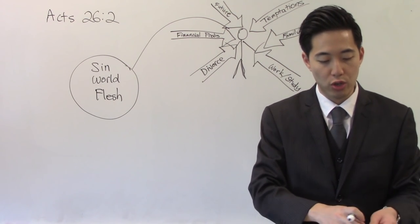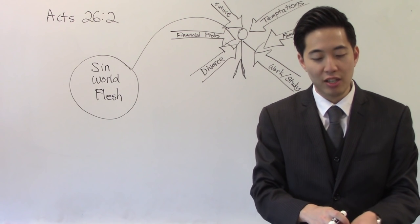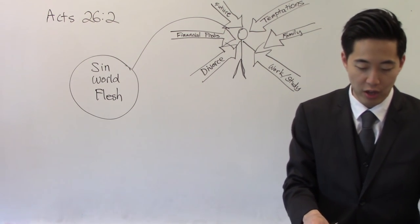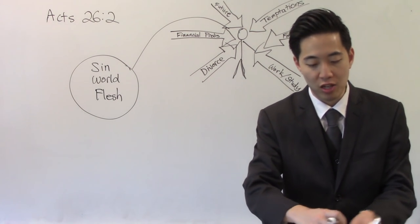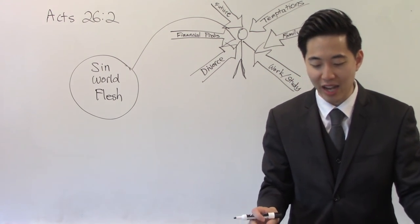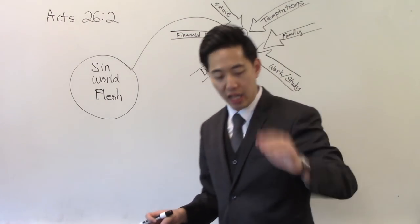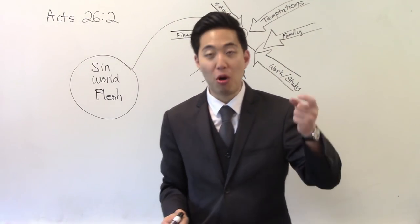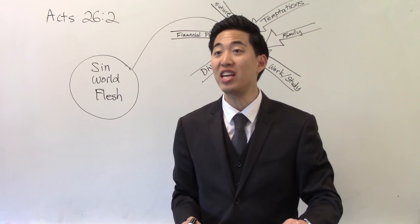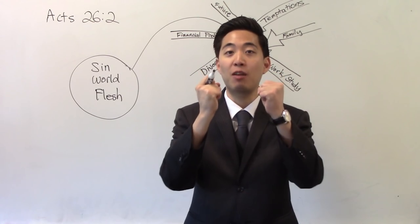Acts chapter 26 verse 2. You won't be depressed unless you think you're depressed, unless you think that you have it hard. But look at Acts chapter 26 verse 2: I think myself happy King Agrippa. And you got to realize this, Paul was in prison for one to two years. But he says I think myself happy.